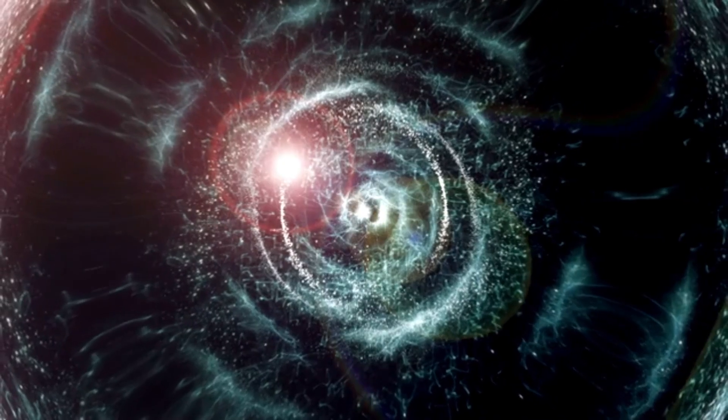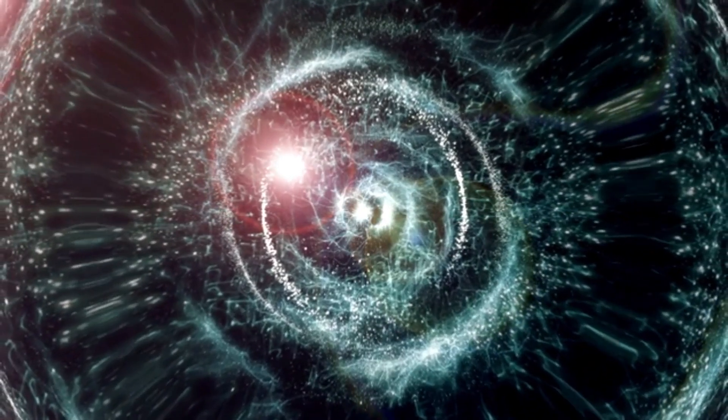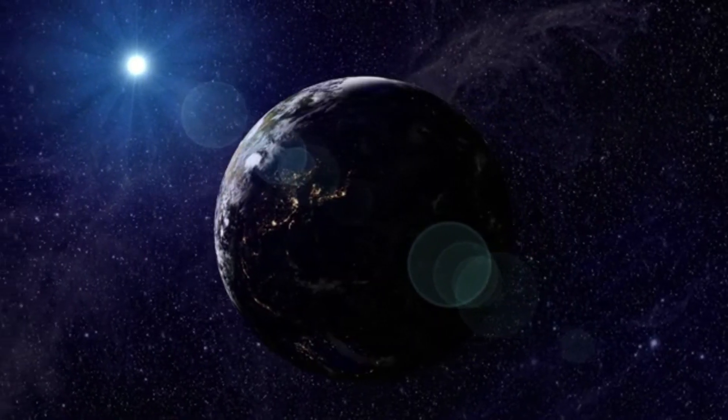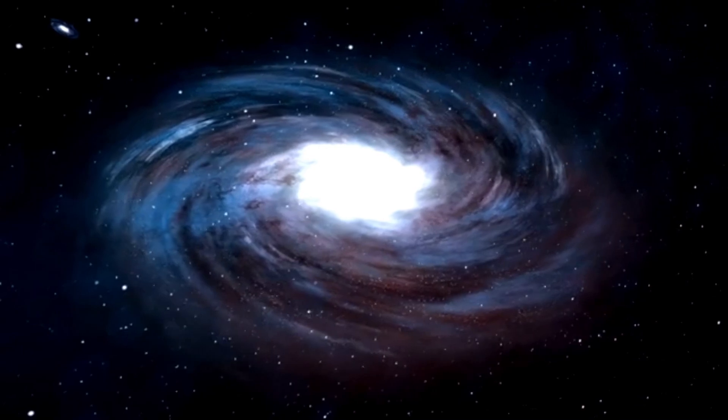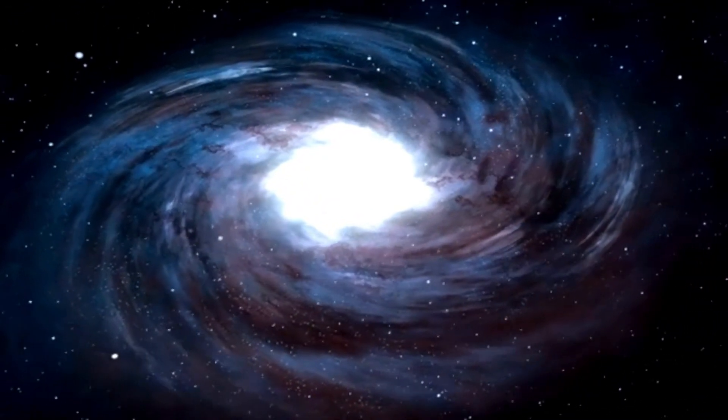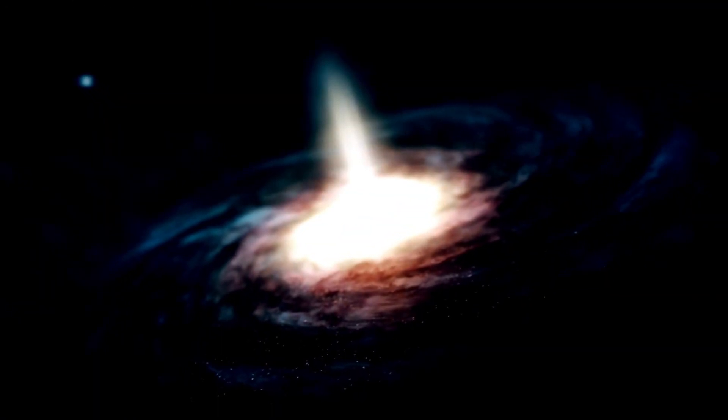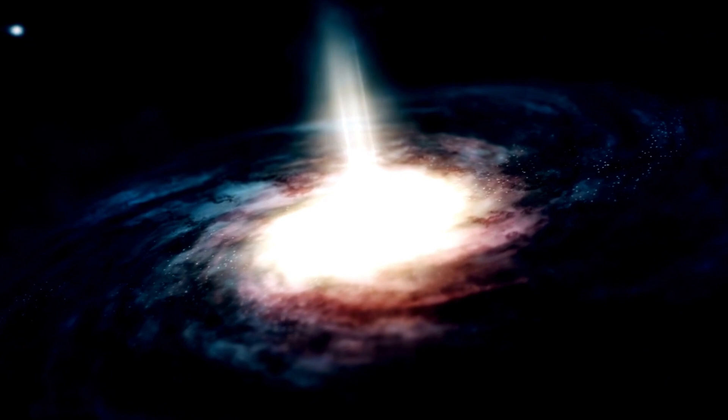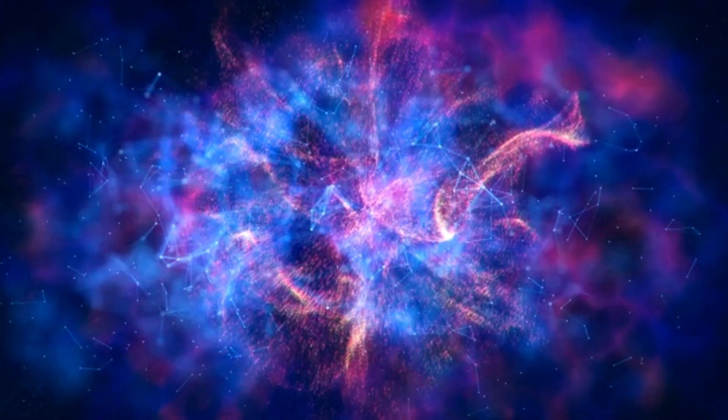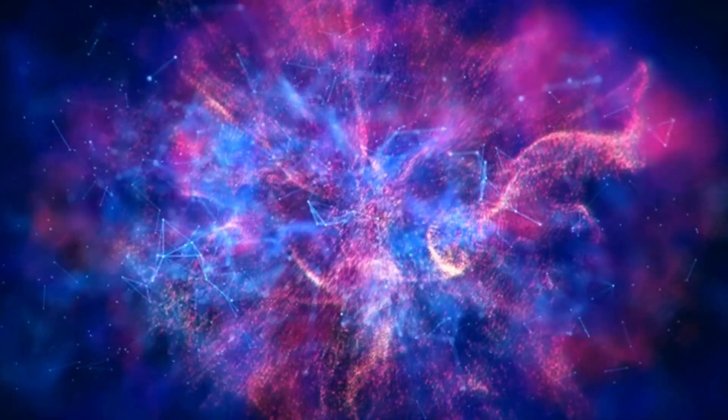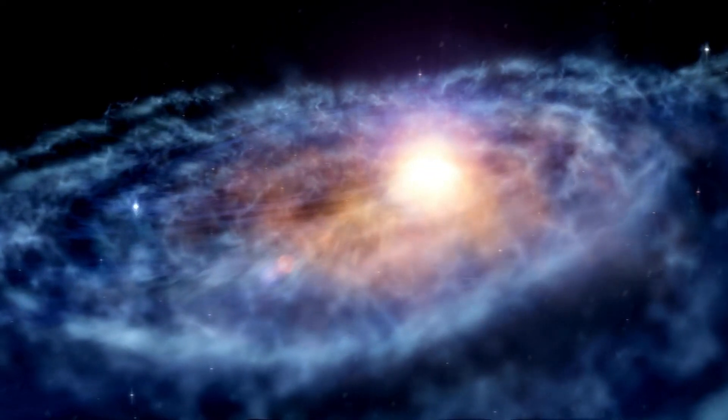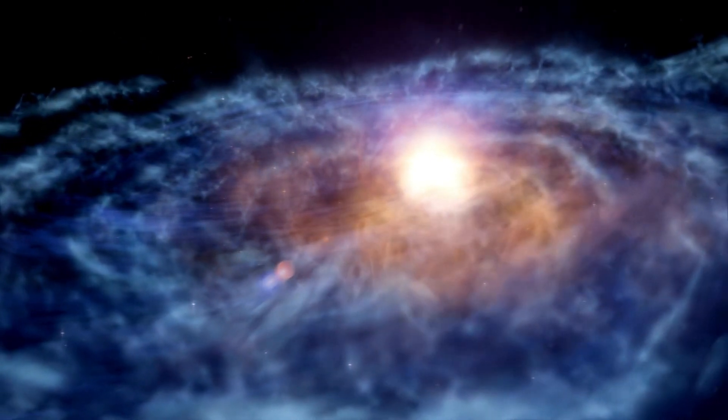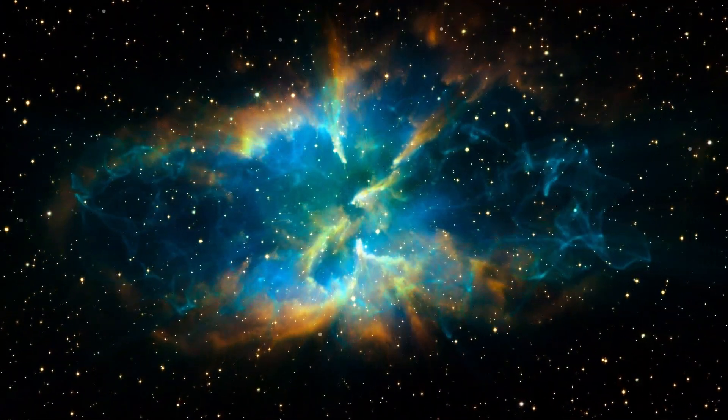Understanding the broader implications of Betelgeuse's eventual supernova is important. When a massive star like Betelgeuse explodes, it releases an enormous amount of energy and material into space. This explosion disperses heavy elements that were synthesized in the star's core, enriching the interstellar medium with elements necessary for the formation of new stars and planetary systems. These supernovae also produce neutron stars or black holes, depending on the mass of the remaining core. The shock waves from the explosion can trigger the formation of new stars by compressing nearby gas and dust, and the energy released can affect the dynamics of the galaxy.